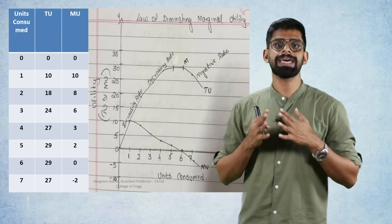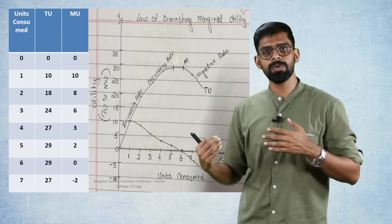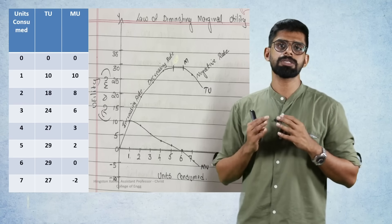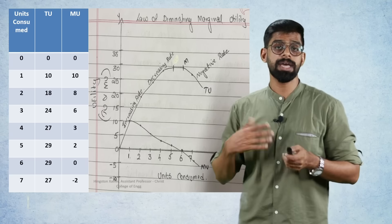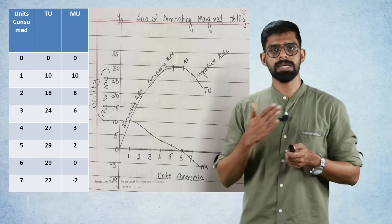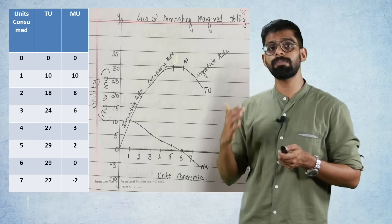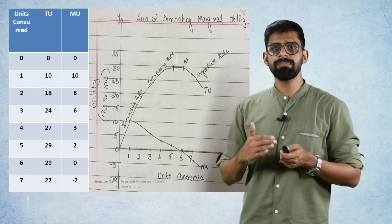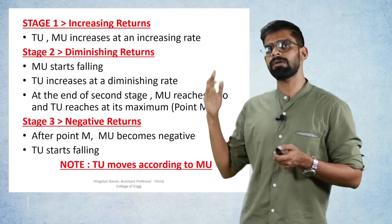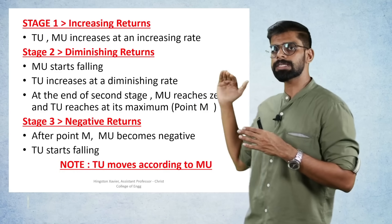In the third stage, the negative rate stage: marginal utility becomes negative, and total utility starts falling for the first time. So we have three stages — increasing, decreasing, and negative rate. That is the Law of Diminishing Marginal Utility and its three stages.